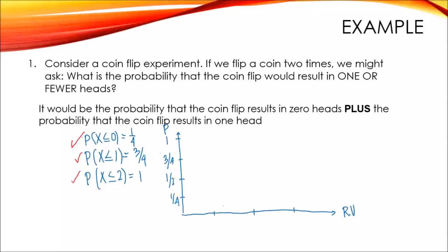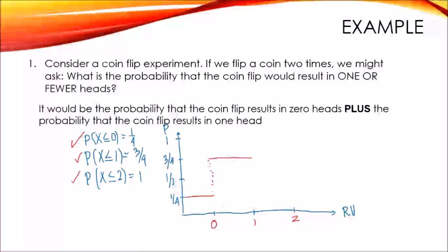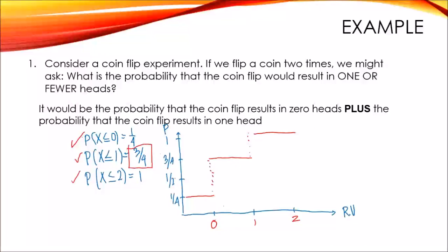After computing the cumulative probability distribution, we plot it in a cumulative distribution diagram. The y-axis is the probability and the x-axis is the random variable, which is zero, one, and two. When x is zero or less, the cumulative probability is one-fourth. When x is one or less, it is three-fourths. When x is two or less, it is one. Since the problem asks for the probability of one or fewer heads, our answer is P(x ≤ 1) = three-fourths.